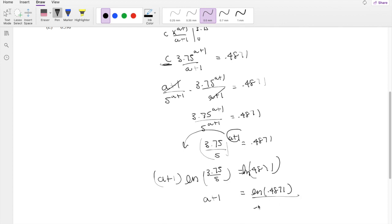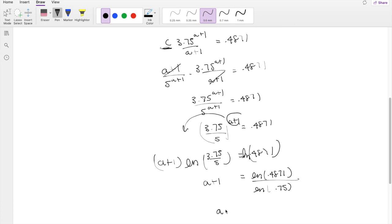Divided by the natural log of 3.75 divided by 5, which is actually just 0.75. So a is equal to natural log of 0.4871 divided by natural log of 0.75 minus 1, which is approximately equal to 1.5.